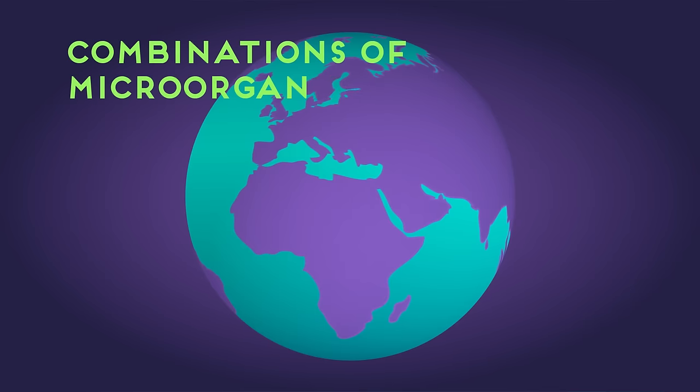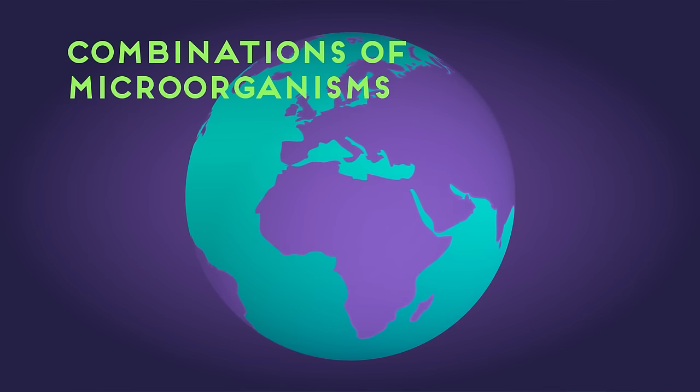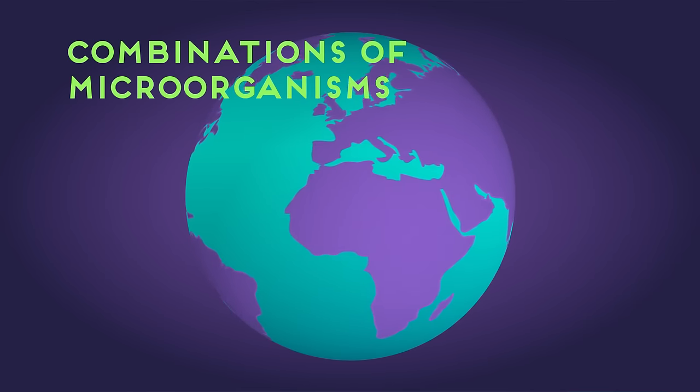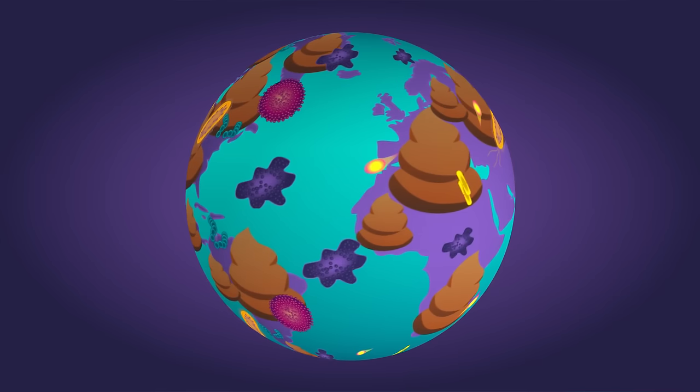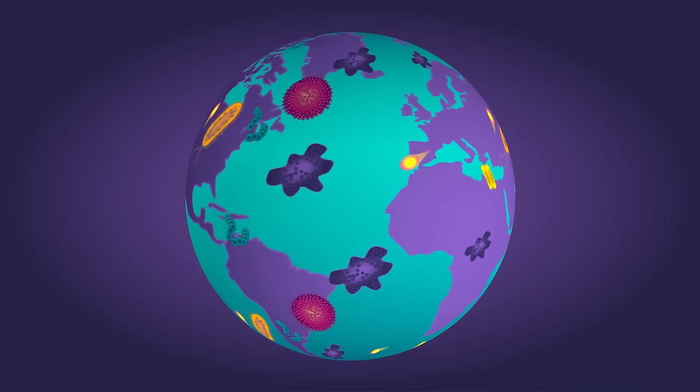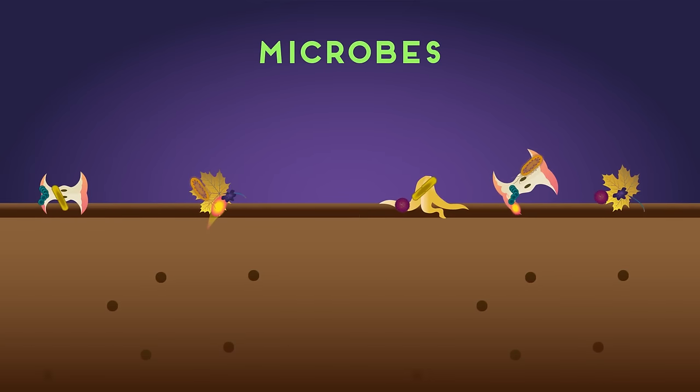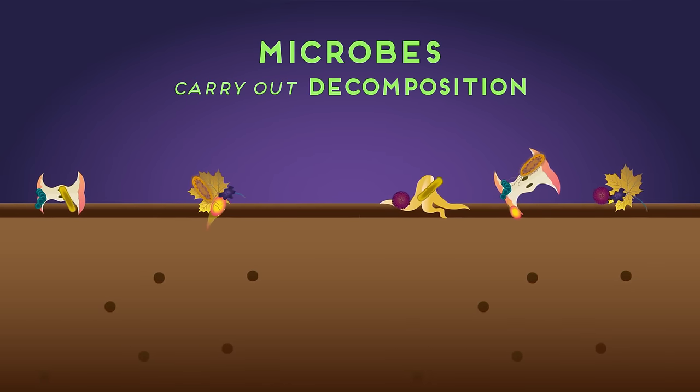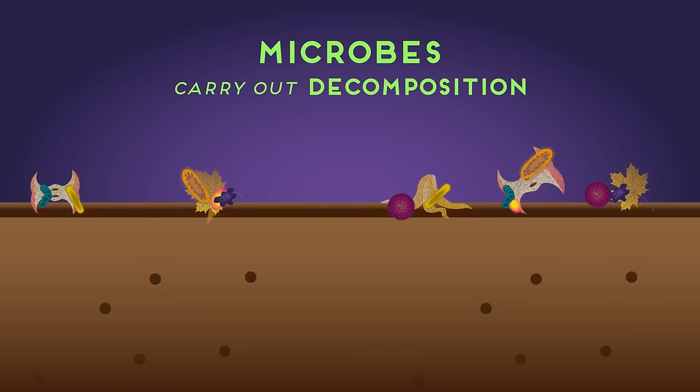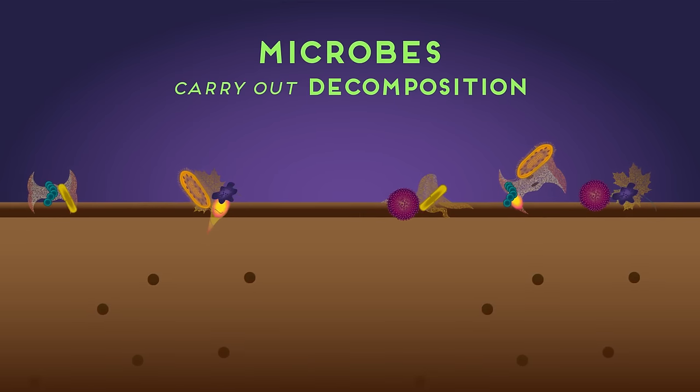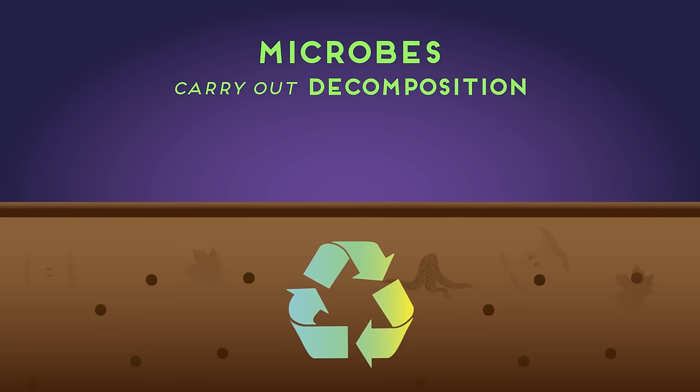7 billion people. Trillions of animals. How come the world isn't just one huge pile of dung? Of course, it's a wonderful community of microorganisms coming to the rescue. Microbes, mostly bacteria and fungi, carry out decomposition, which is the breakdown of organic matter like dead organisms and material waste into simpler substances which are then recycled back into the soil.